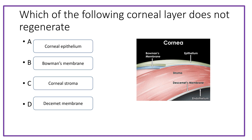The answer is Bowman's membrane. When there is any infection, inflammation, or trauma involving Bowman's membrane, it does not regenerate, and it causes corneal opacity leading to visual loss.